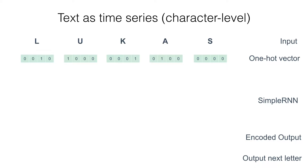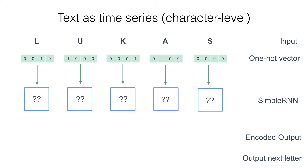Here I have my name Lucas. The third element is an L, so our vector has the third element set to one and the others zero. The first element of this vector corresponds to U, so the second vector that goes into our network is a one followed by zeros. The fourth element is a K, so the third vector that we put in is all zeros except for the fourth element set to one.